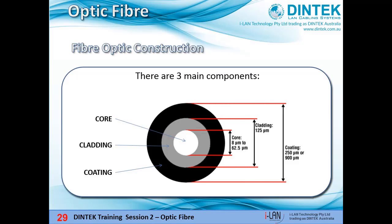The outer protective coating is typically an ultraviolet light-cured acrylate applied during manufacturing. It protects the fibre from moisture, dust and damage. It's the coating that we strip off when we fit a connector — not the cladding.